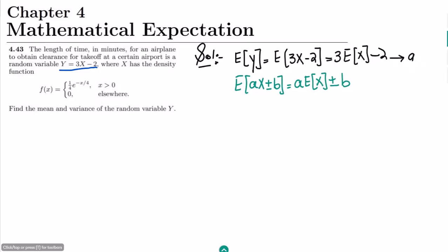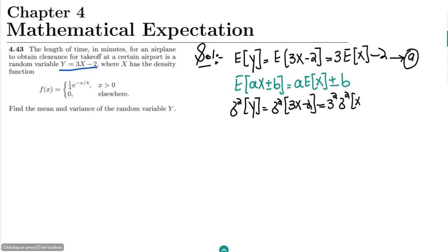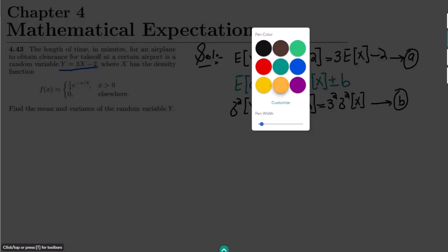Also, to find the variance of Y, this would be the variance of 3X minus 2. In finding out the variance, we have seen that only the multiplicative term has an effect, so it would be 3² times Var(X), which is 9·Var(X). Let me call this equation B, because the additive or subtractive term is neglected here.